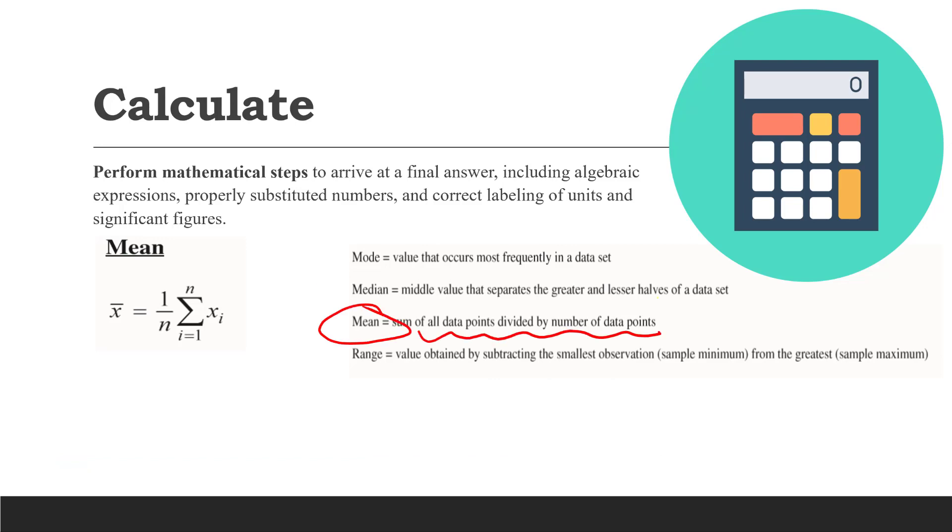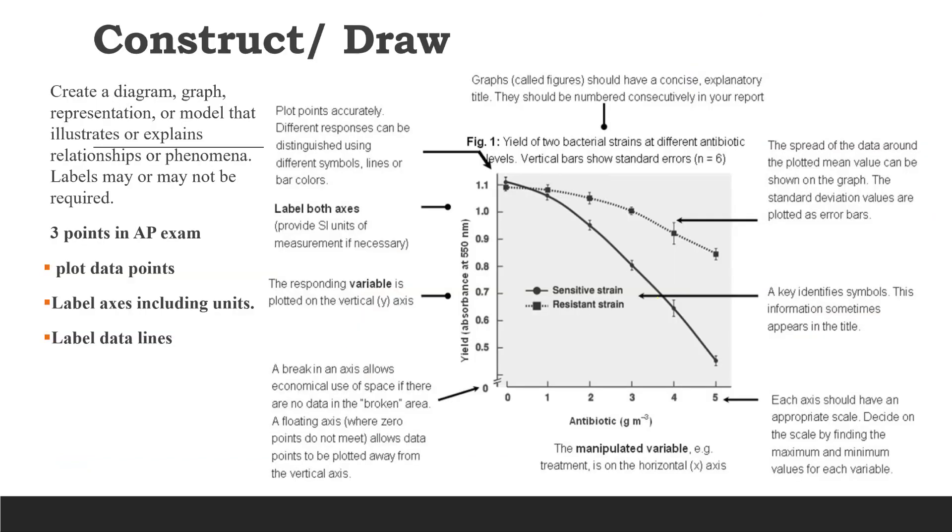One of the most common calculating tasks would be to calculate the mean, which is an average of your data points. If we were asked to construct or draw, it is most likely about drawing a graph, and it is very important to know how to draw or construct a graph to represent our data. A good graph needs to have these three important things: correct plot data points, correct labeling of axes including units, and correct label data lines on the axes with appropriate scale. These are the three points that will be graded in your AP exam.